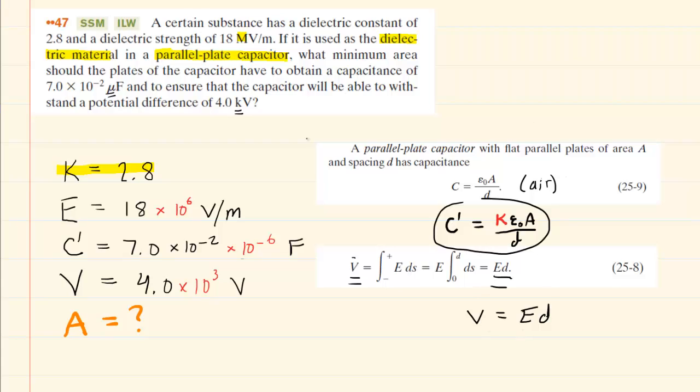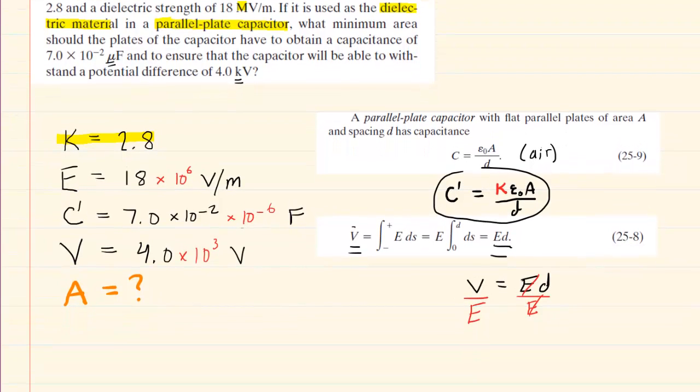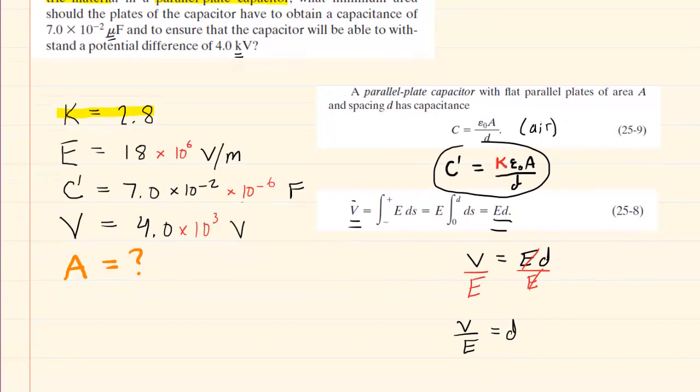So what we'll do is solve this V equals ED equation. We'll solve it for the distance. And so we can do that by dividing both sides by the electric field magnitude so that the electric field magnitude cancels out on the right-hand side. We see, of course, that V divided by E will give us the value of the distance. And the reason that that's useful is because we can substitute this expression in for the distance of our capacitance equation. So we'll make that substitution right now.